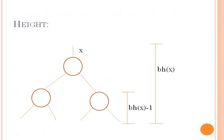For internal nodes, x is a node and bh is the black height. To find the height of the internal nodes, we move as black height of x minus 1, and the total height of the tree will be black height of x.